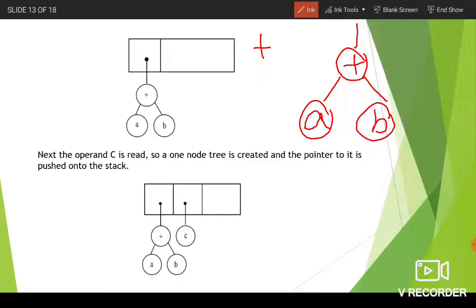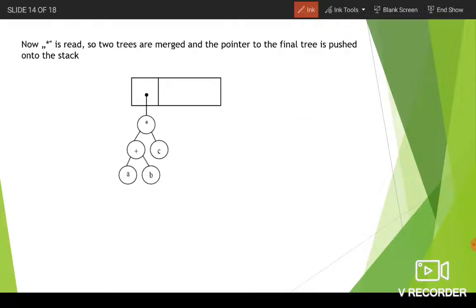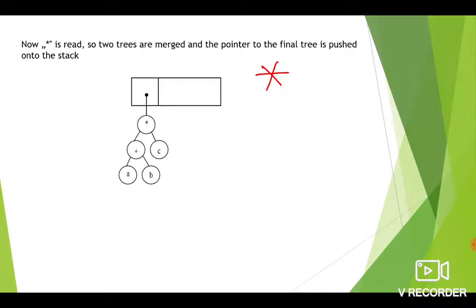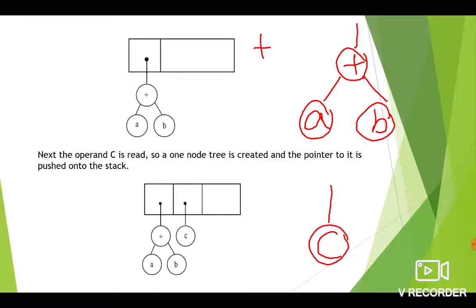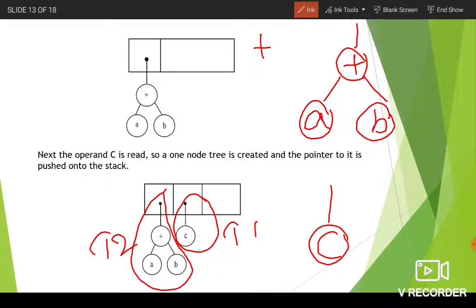Next, the symbol 'c' is an operand, so we create a one-node tree for it and push the pointer onto the stack. The next symbol is '*', which is an operator, so we pop two pointers from the stack. The first pointer popped is named t1 (which is 'c') and the second pointer is named t2 (which is the '+' subtree).